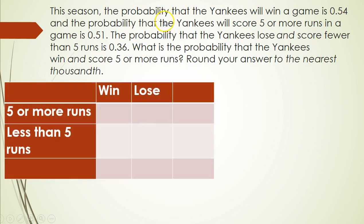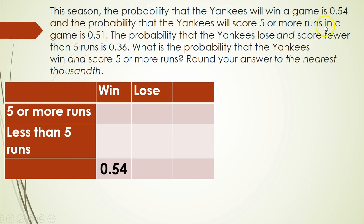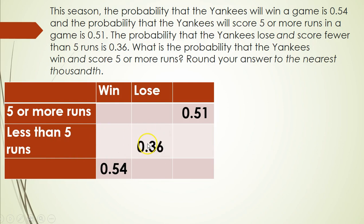Again, I'm going to make a table. This one has wins and losses, and five or more runs versus less than five runs. The probability the Yankees win a game is 0.54 — that's the total wins row. The probability of scoring five or more runs is 0.51 — that goes as the column total. The probability of losing and scoring fewer than five runs is 0.36 — that goes in that specific box.